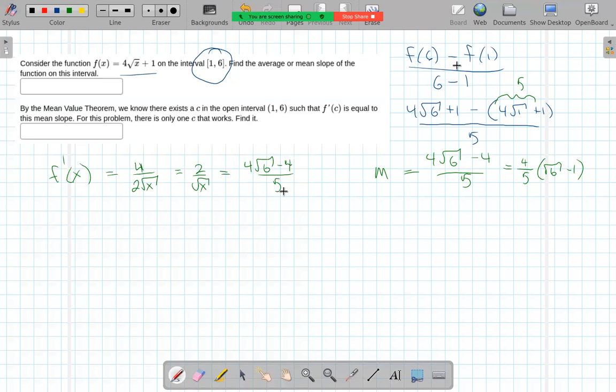And easiest thing to do right here is flip both sides, so that gives me the square root of x over 2 is equal to 5 over 4 square root of 6 minus 4.